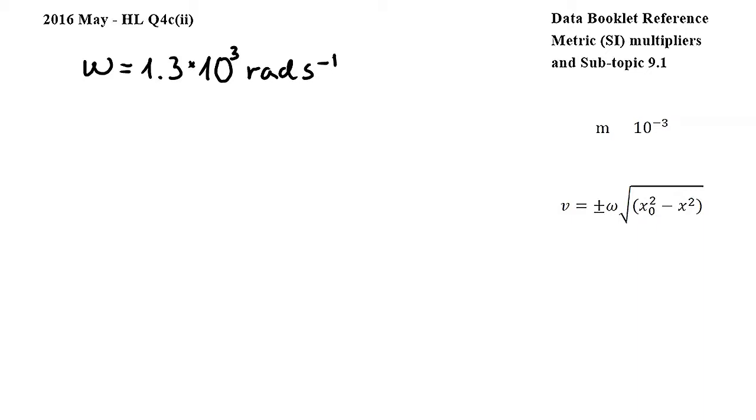In this question we have to show that the speed of the particle at t equals 0.882 milliseconds is 4.9 meters per second.